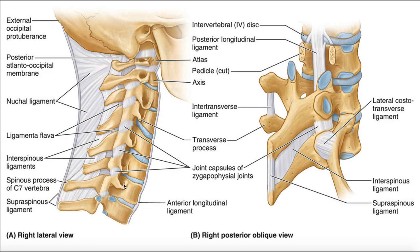The vertebral artery actually does not course through the foramen of C7. It actually enters at C6, goes up through C5, C4, C3, C2, and then eventually C1 as it goes inside the skull. You'll also notice there are intervertebral discs, but they don't exist at every single level. The first disc starts right beneath the axis — the first intervertebral disc in the spine is the disc between C2 and C3. There's no disc between C1 and C2 or the occiput and C1.